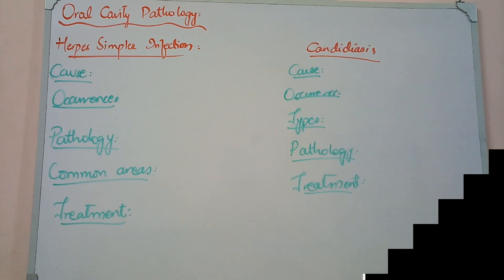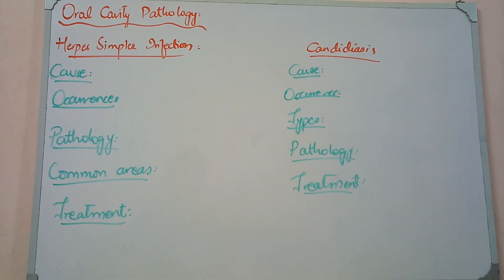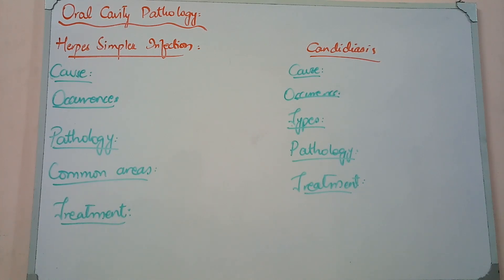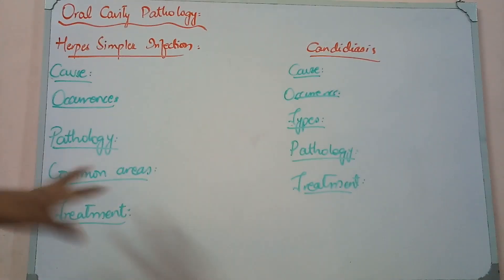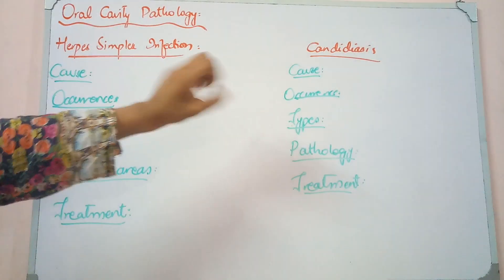Hello everyone. We are talking about the lesions of the oral cavity — we started gastrointestinal tract pathology and I covered aphthous ulcers in detail. Now we are going to talk about inflammatory conditions of the oral cavity, which include herpes simplex infection and fungal infection.